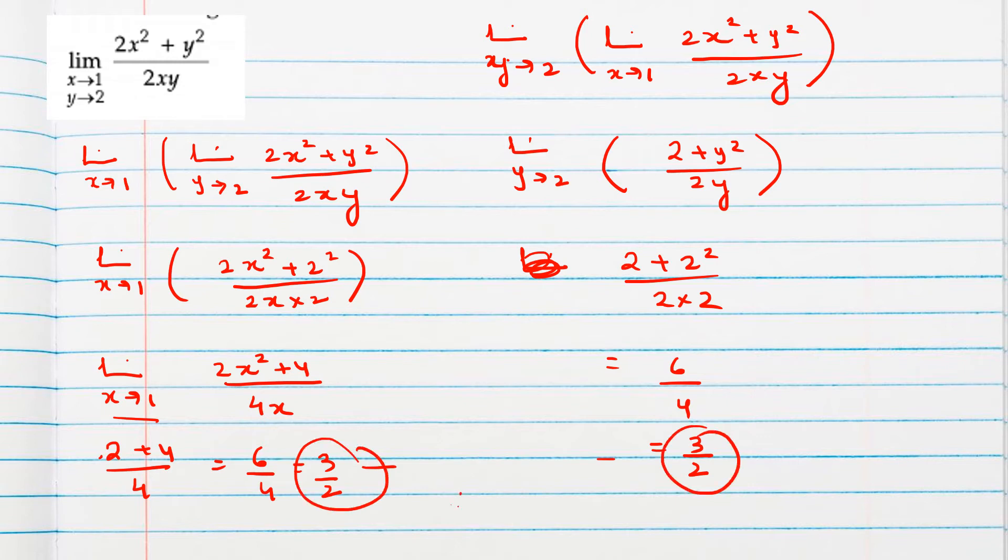Therefore, limit x tends to 1, y tends to 2, 2x square plus y square by 2xy is nothing but 3 by 2.